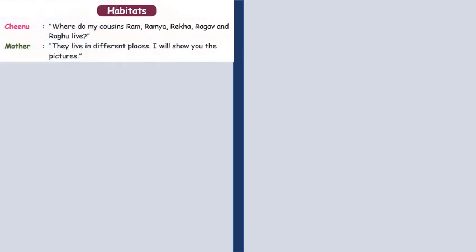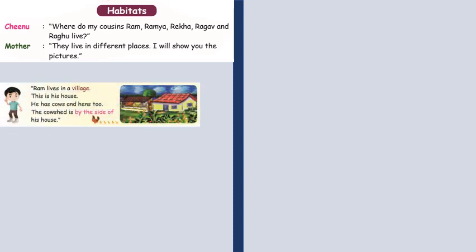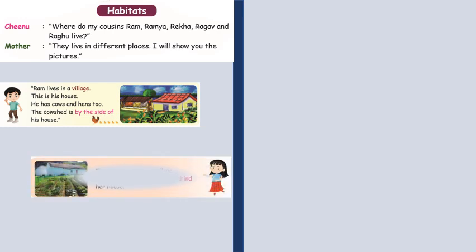Here, we are going to discuss about habitats. Where do my cousins Ram, Ramya, Rekha, Raghav and Raghu live? They live in different places. I will show you the pictures. Ram lives in a village. This is his house. He has cows and hens too. The cow shed is by the side of his house. Ramya also lives in a village. She has a vegetable garden behind her house.